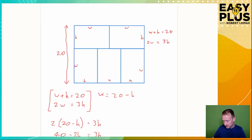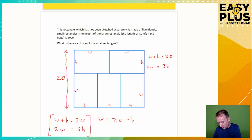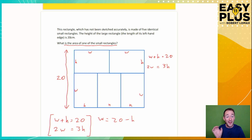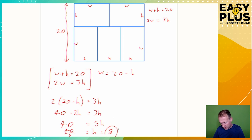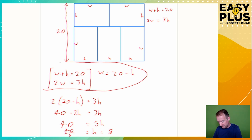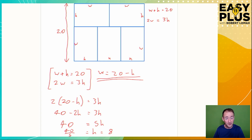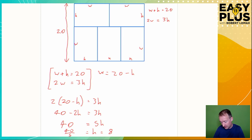We are asked to find the area of one of the small rectangles. To find the area, we need to know H and W. Now we've got H — we know it's 8. To find the width, we just go back to one of our earlier equations: W equals 20 minus H. Now that we know H, we can write 8 instead of H. So W equals 20 minus 8, which equals 12.